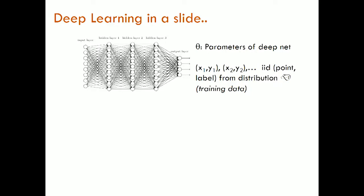I'll start by reminding you, just to set up the notation and terminology, what deep learning is. For simplicity, I've drawn here a fully connected deep net, where the layers are fully connected — no convolutions or weight sharing. You have a layer of computing units, which you can think of as gates, and they usually have non-linearities. The parameters are the weights on the edges, the biases on the nodes, and they define an input-output function.